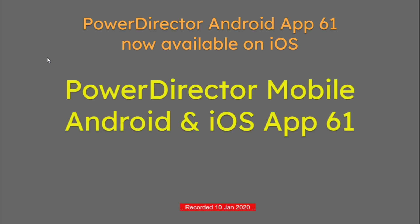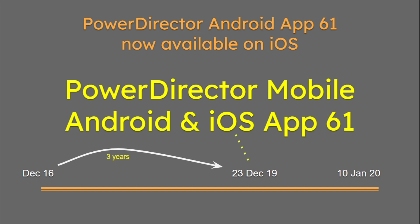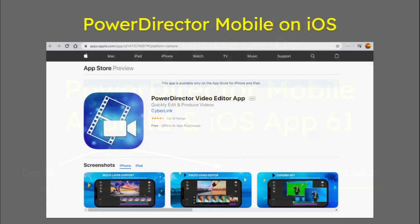Today we're talking about PowerDirector Android App 61, now available on iOS, which is big news. The title should really be PowerDirector Mobile Android and iOS App 61. This is recorded on the 10th of January 2020, which is quite important. I personally have been using Android PowerDirector since December 16 — three years. It's only been available on iOS for about 18 days. You can see it on the App Store. This is very new to me because I'm a thorough 100% Android person.